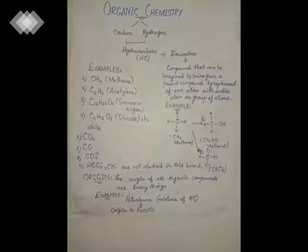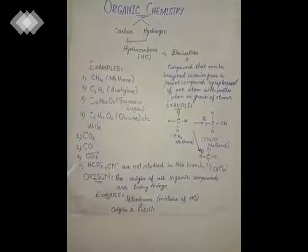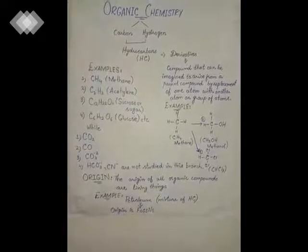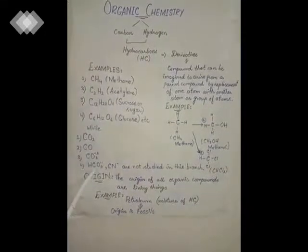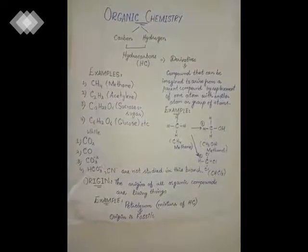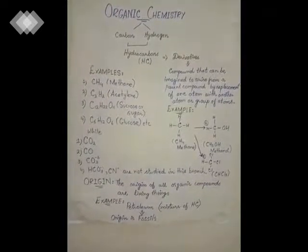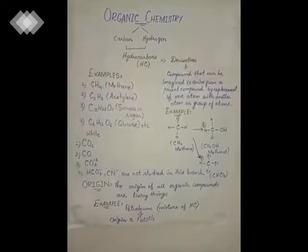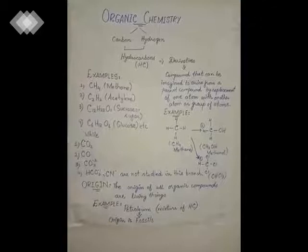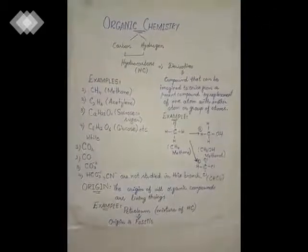Carbon dioxide, carbon monoxide, and carbonates are not organic compounds because they contain carbon but not hydrogen. In bicarbonate (HCO₃⁻), hydrogen is present but the ratio of oxygen is more than that of hydrogen and carbon, so it is not an organic compound. Cyanide also does not contain hydrogen. For that purpose, we can say that these compounds are not organic compounds — they are inorganic compounds.